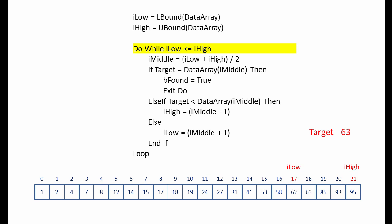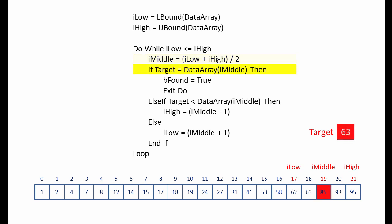We return to the top of the loop. We ask: is the low pointer less than or equal to the high pointer? You can see they're coming together. Eventually we'll find what we're looking for, or the low pointer will exceed the high pointer. So we haven't met the exit condition yet, so we do the same again. Calculate the mid value, ask if it's equal to the target, ask if it's less than the target. Now in this case it's slightly different — it is less than the target, so we're going to discard the top half of the list by redefining high.